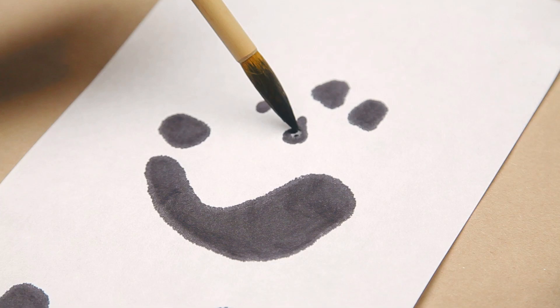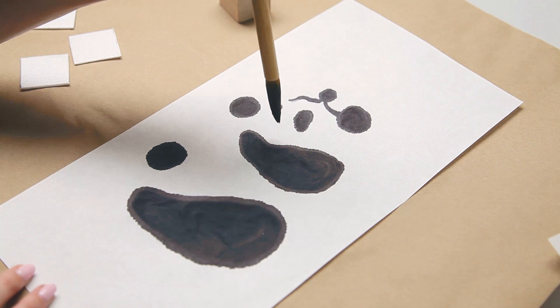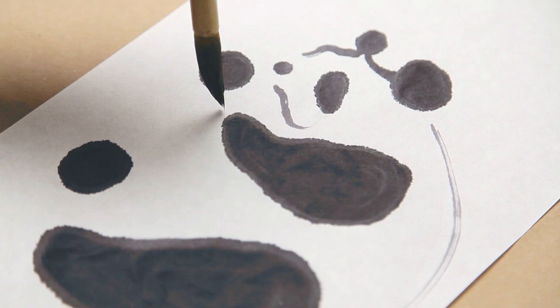For the face, paint four circles to make up the different parts of its face, like the nose, ears, and eyes. Lastly, connect the circles with a skinny line to create the shape of the panda.